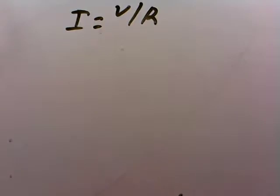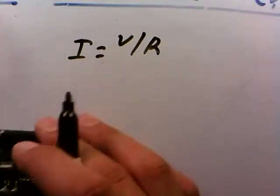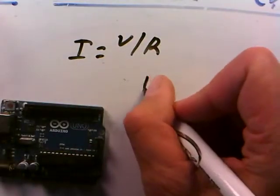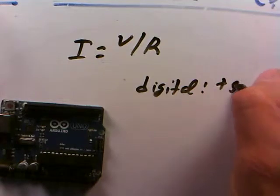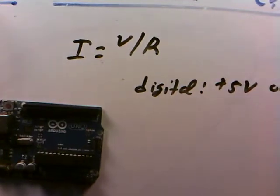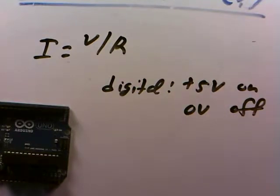Remember we have I equals V over R. Ohm's law really tells us the difference between these three quantities. They're in separate positions in the equation. So in the Arduino here, these digital lines certainly they rise up to five volts when on and zero volts when they're off. They certainly do that. That is true.